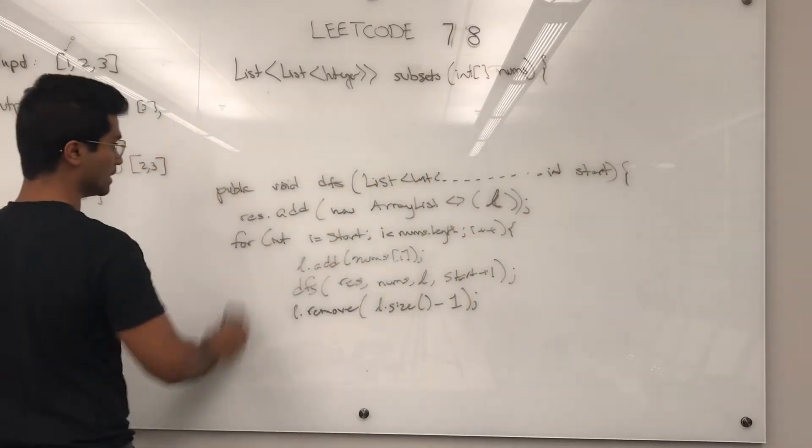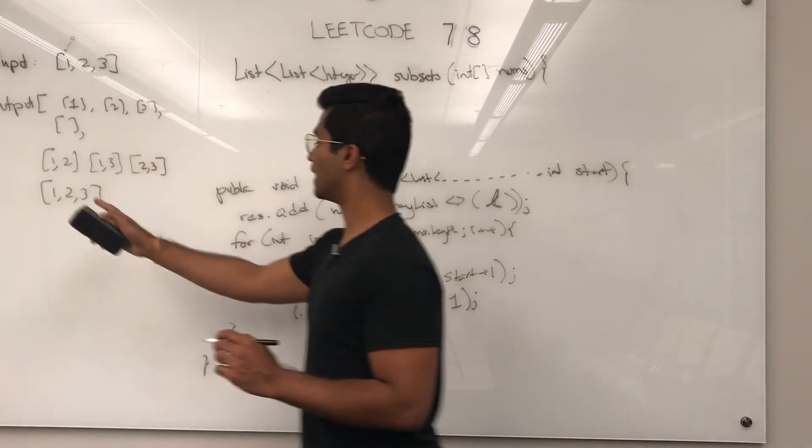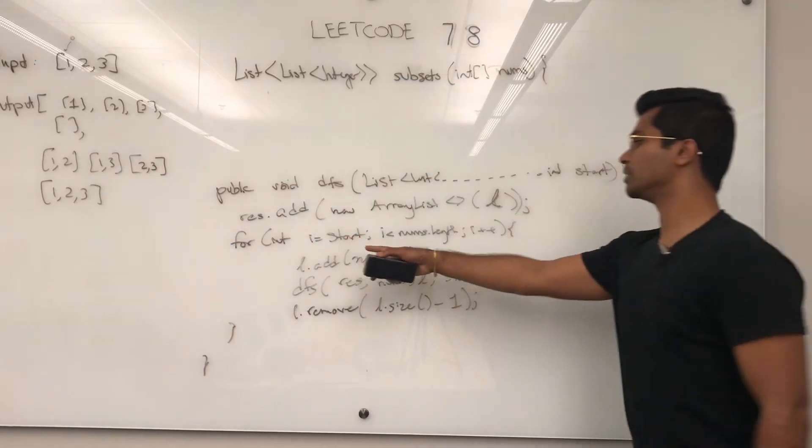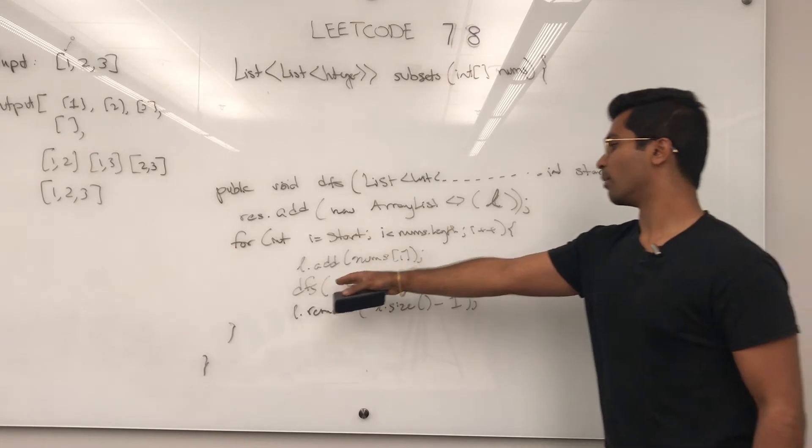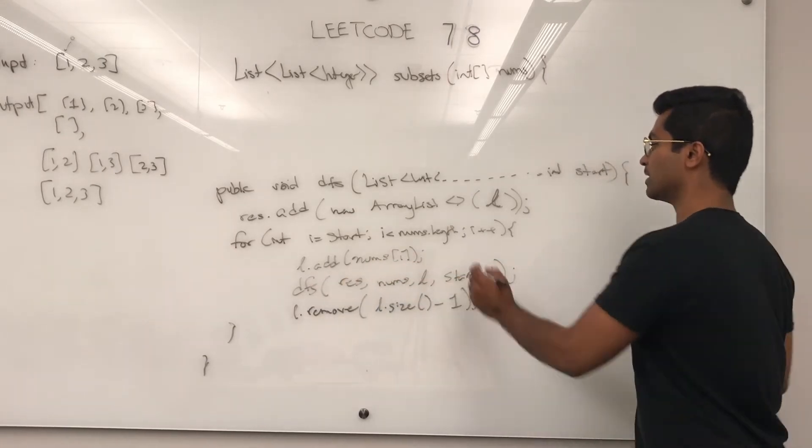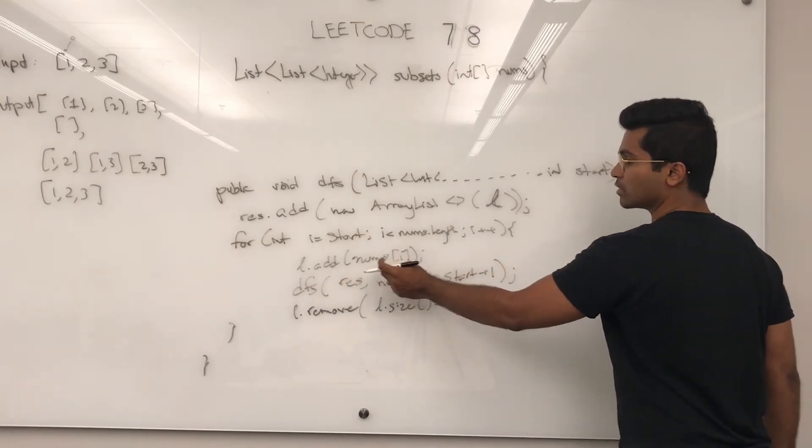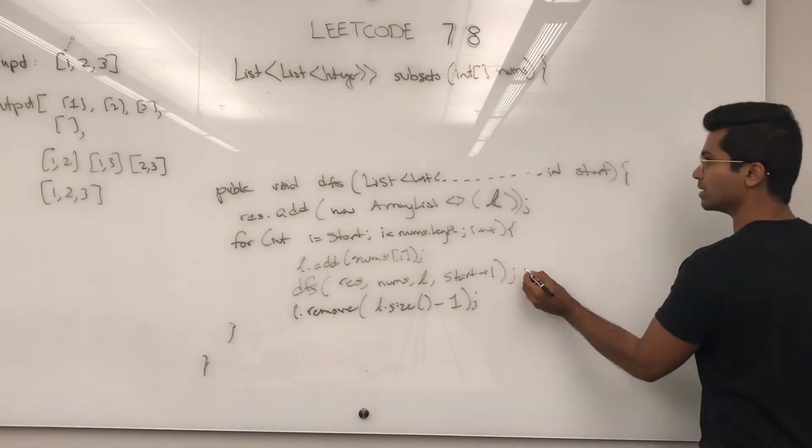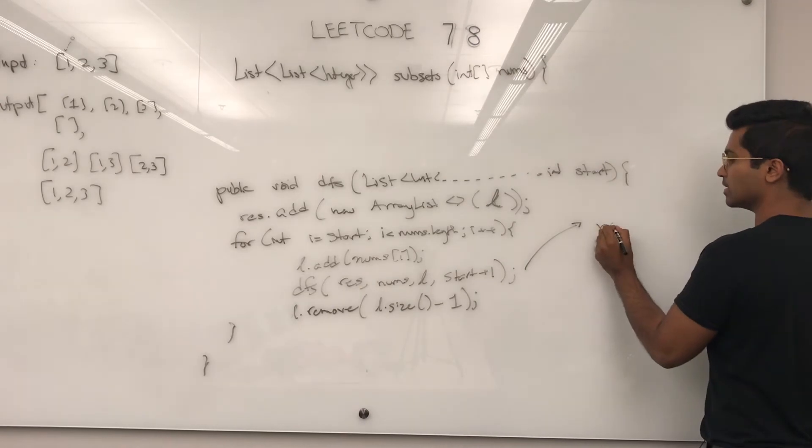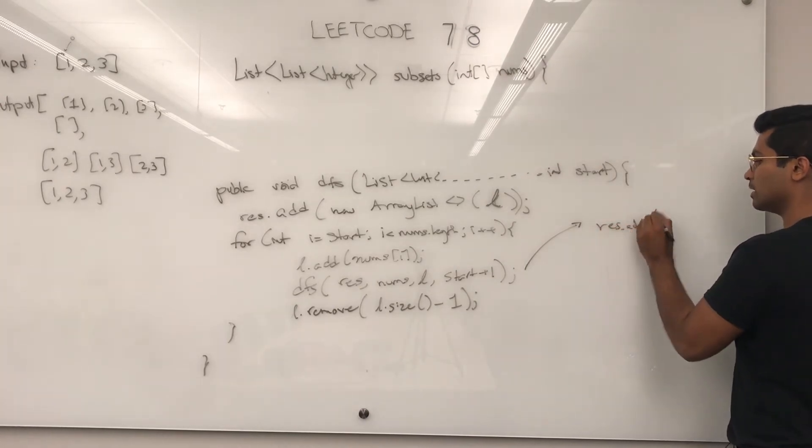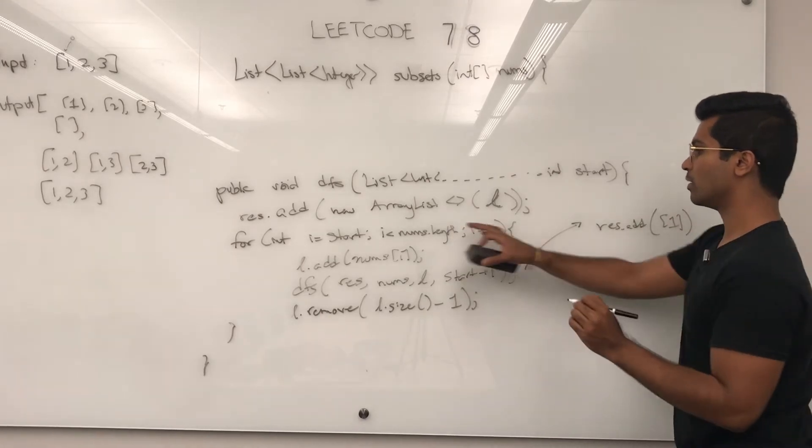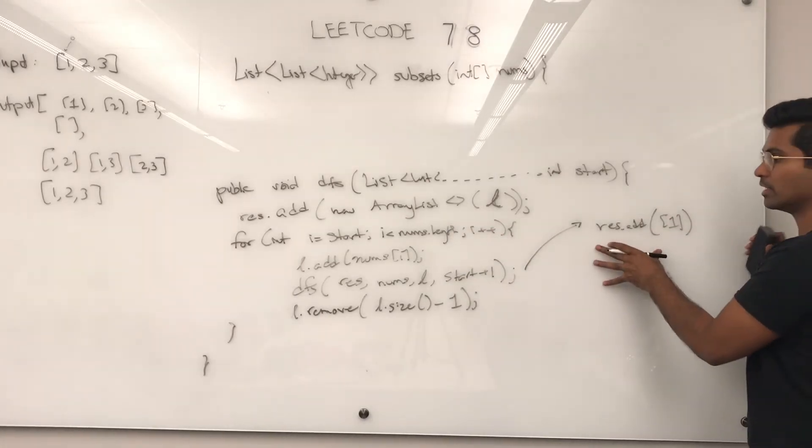So the first stack, the null set gets added, then i is equal to zero, when this guy calls it, when this guy adds it, so l after this point is going to have one in it, when this guy calls his own DFS for the first time, res is going to add one pretty much.